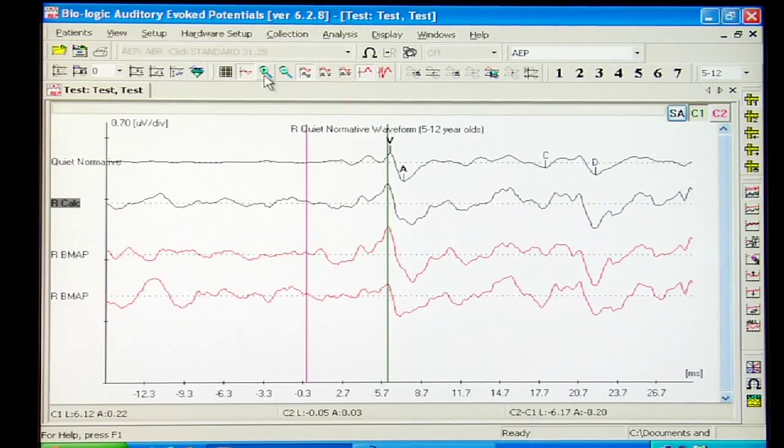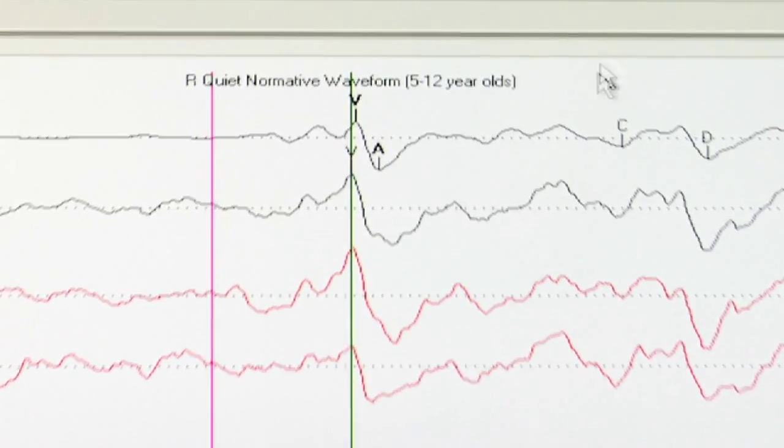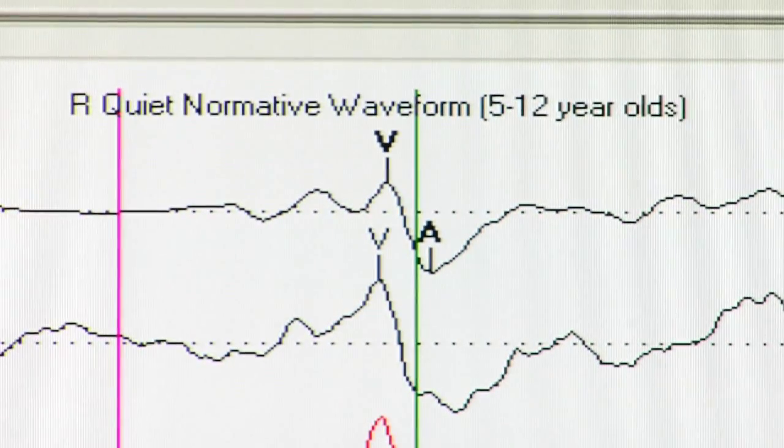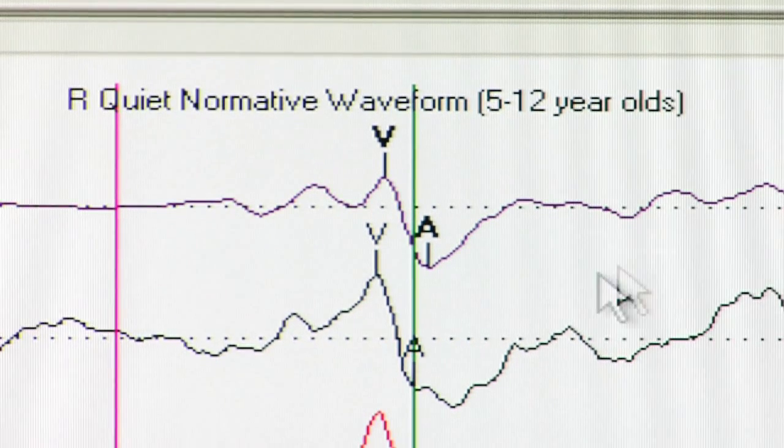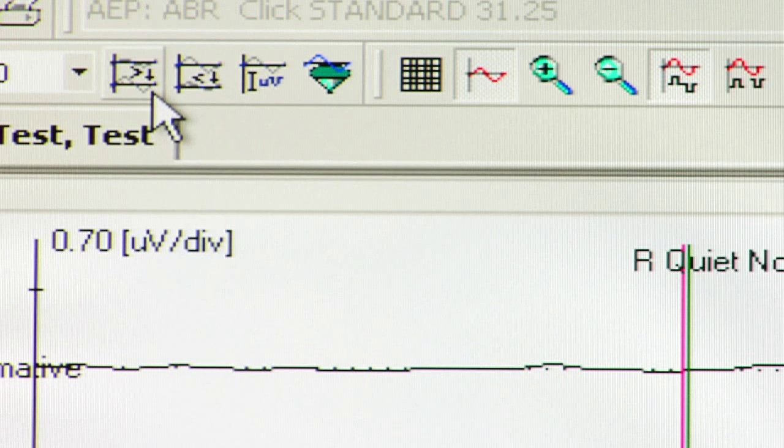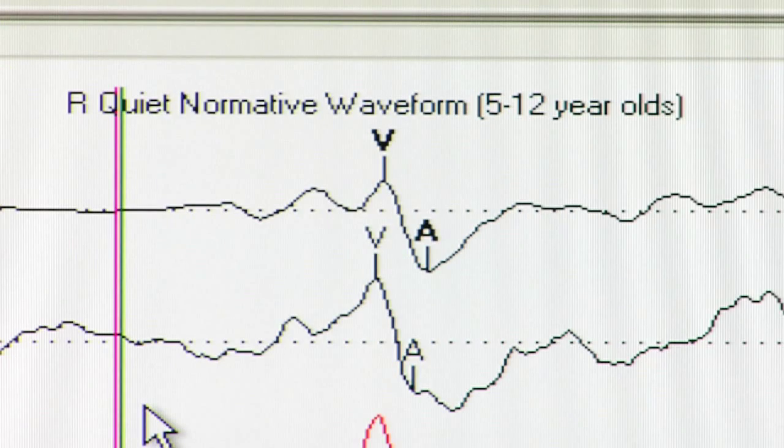These peaks are called waves 5 and A, and they reflect the response to the onset of the sound. Wave 5 occurs at roughly 6.53 milliseconds, and wave A is the trough immediately after 5. Use the template waveform and the two trials to assist you. When marking these peaks, it is important to zoom in both horizontally and vertically to precisely identify 5 and A.